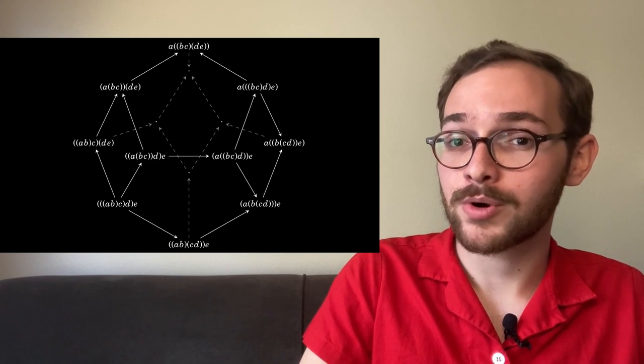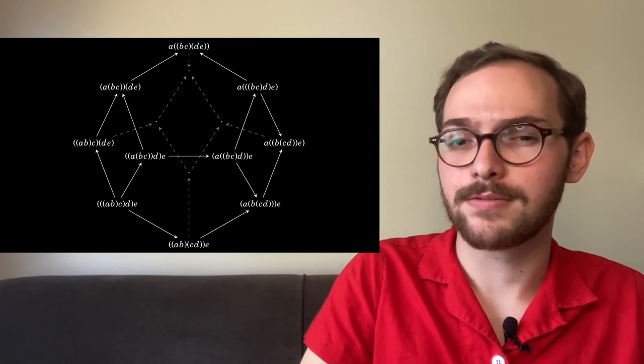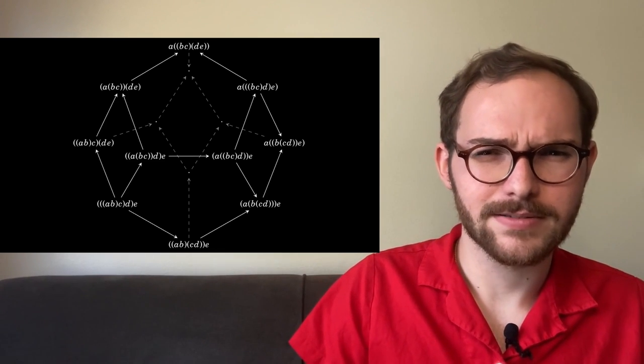Parenthesizations are intimately related to an important object in math and physics called the associahedron, but that's a story for another time. The last place we meet our friend for today comes with a familiar face: Euler. The Catalan numbers were actually originally discovered by Euler, but follow the long tradition in math of things being named after the first person after Euler to discover them. Euler discovered the numbers by counting triangulations of convex polygons.